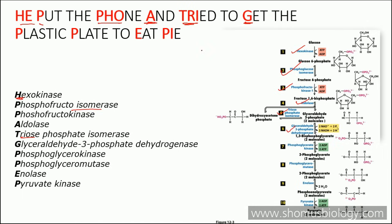Then P — phosphoglycerokinase, the seventh enzyme. Another P — phosphoglyceromutase, the eighth enzyme. Then E — enolase, the ninth enzyme. And PI — pyruvate kinase, the tenth and last enzyme. It's a rule of ten: ten enzymes and ten intermediates. It's all about your great-grandmother preparing pie for you, while you put down your phone and get the plastic plate to eat pie.